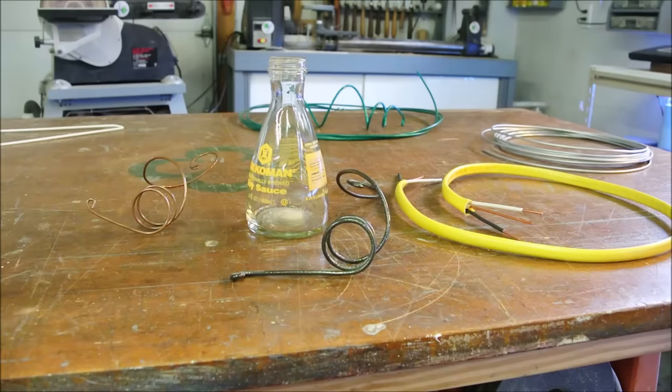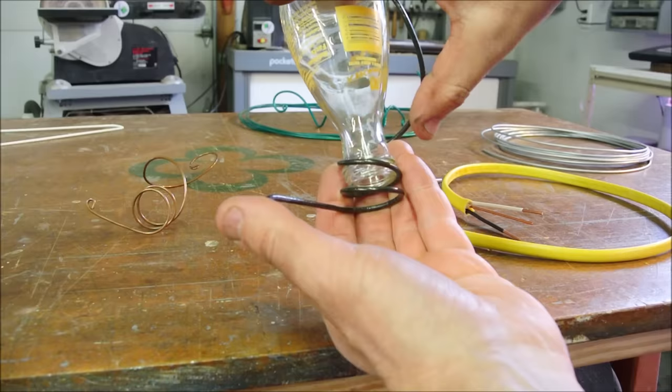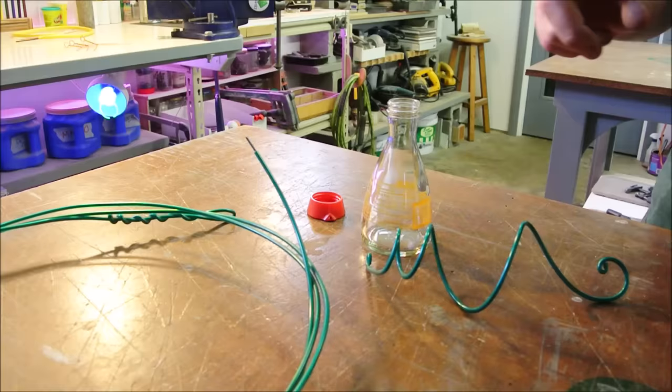One really easy option is this 12 gauge copper electrical wiring. What are some benefits of using copper wiring? It's easy to find. It's easy to bend because it's soft. And it won't rust.